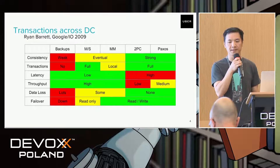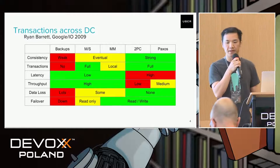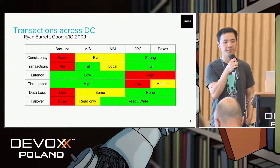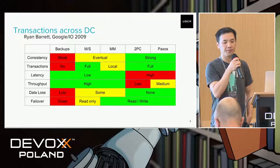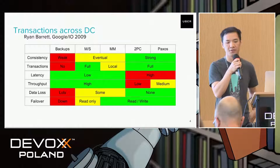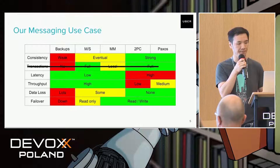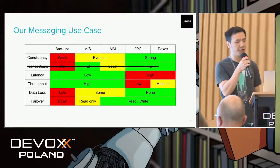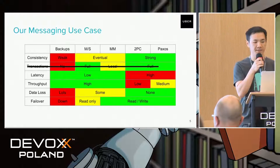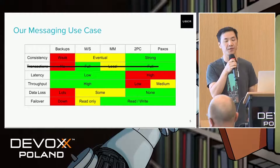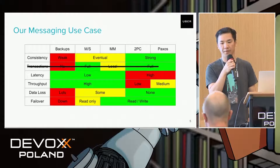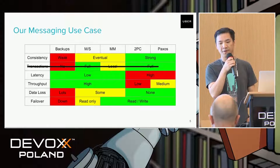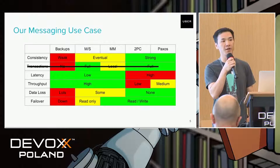If you look at master-slave and master-master approaches, they are very good in terms of performance — they have very low latency and very high throughput — but they don't provide very strong consistency or transaction guarantees. In our case we don't need transaction guarantees, but for the other properties like consistency, latency, and throughput, we need all green. Unfortunately, looking at this table it's very sad that we cannot find even one column with all green.